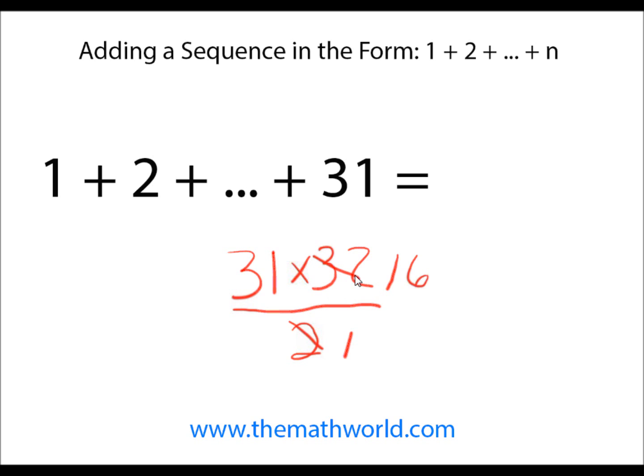You'll always be able to reduce since you'll have one of the numbers be even and you're always dividing by 2. So we have 31 times 16. There are a lot of different methods you can use to multiply 2 digit numbers by each other. I have another video that has a nice little trick to do this.